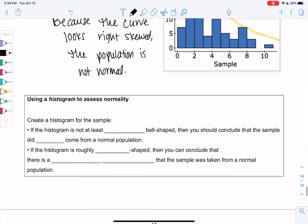So we'll summarize this. If we're using the histogram to assess normality first we need to create the histogram. If the histogram is not even at least roughly bell-shaped like example 2, then you should conclude that the sample did not come from a normal population. It's so different there's no way it's normal. If the histogram is at least roughly bell-shaped, then you can conclude that there's a reasonable possibility that the population is normal. And again that has to do with the idea that we can't prove with absolute certainty but we can prove that it's likely.